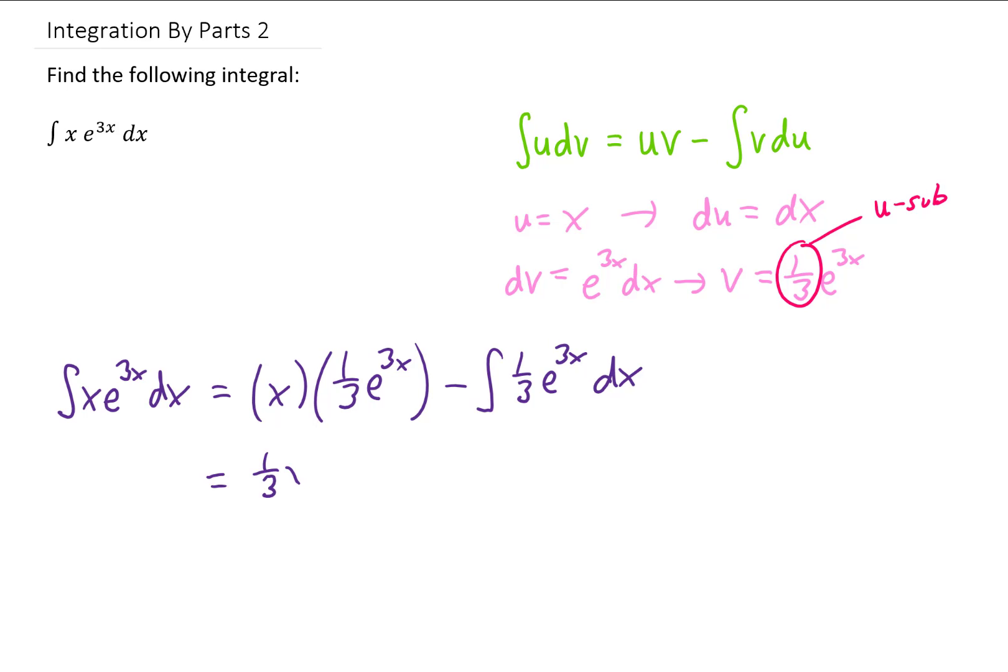To make that maybe a little bit more clear, I'll do one step of simplification. And you'll note that integrating e to the 3x is just going to give us another 1 third e to the 3x. Combining the 1 third and the 1 third just gives us 1 ninth.